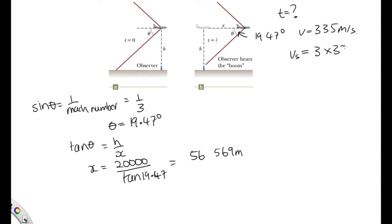So three times 335 meters per second. So if we want to work out how long it's taken to travel the distance x, we can just use time is equal to distance over speed. So that's 56,569 meters over 3 times 335. And solving that on the calculator, we end up with 56.3 seconds.